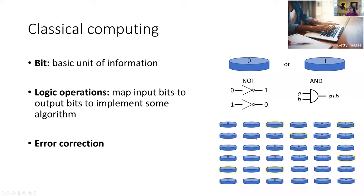Our one-slide review of classical computing — and when I say classical computing, this is basically every computer that currently exists. I want to highlight three aspects. First, you store your information in bits, which are your basic unit of information — something that's either a zero or a one. It's just a binary variable with one of two options; you can think of it as a coin that's either face up or face down.